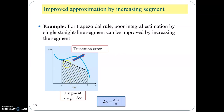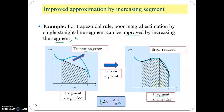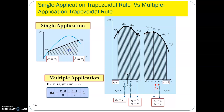In the previous example, using one segment produces a huge truncation error. You can improve the accuracy of the integration by increasing the number of segments, which reduces the step size. For example, using three segments significantly reduces the truncation error. To increase accuracy, you can increase the segment count or reduce the step size. Using one segment is called the single application trapezoidal rule, and we can improve accuracy by increasing the number of segments.